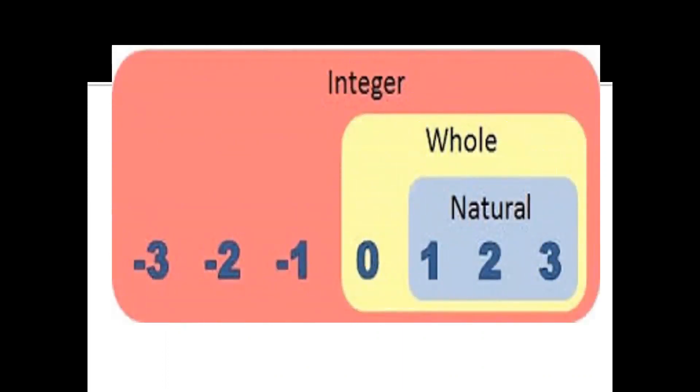Integer is made up of all whole numbers including zero, natural numbers one, two, three, four and the negative numbers minus one, minus two, minus three, minus four and so on.